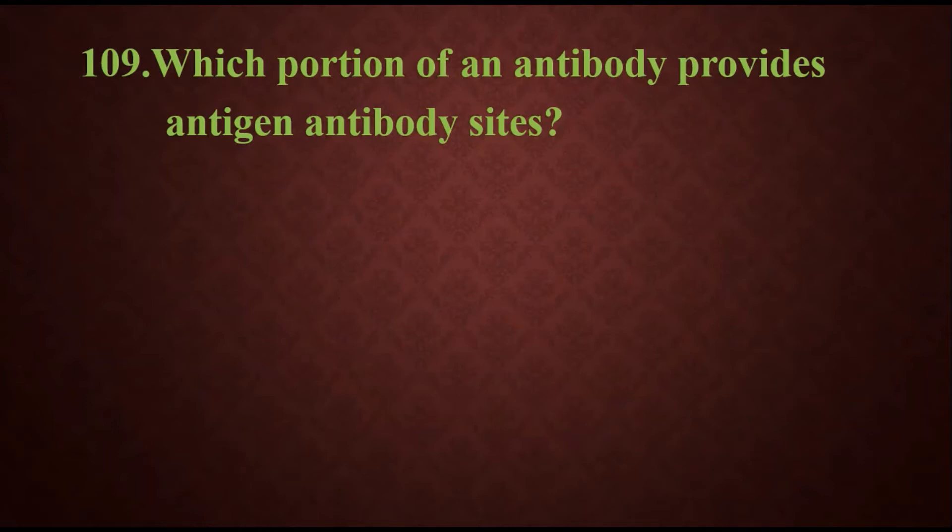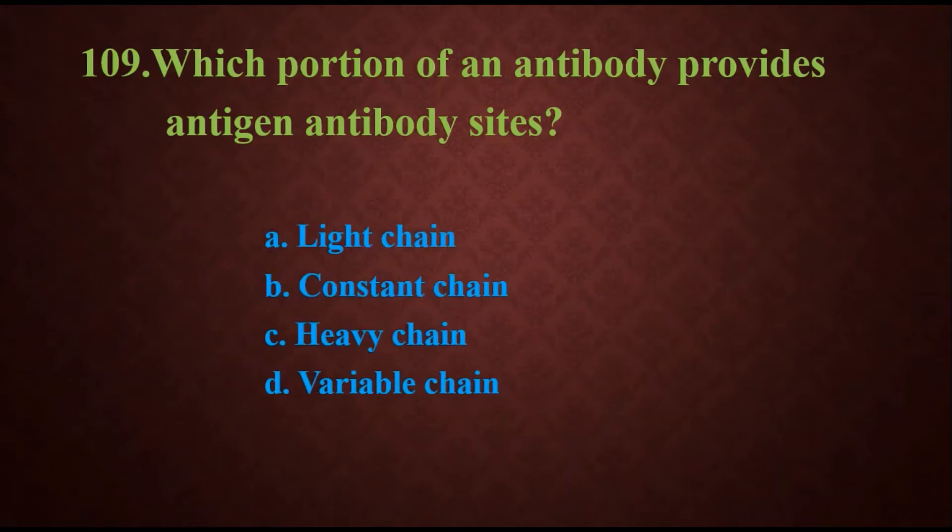Question 109: Which portion of an antibody provides antigen antibody sites? Options are light chain, constant chain, heavy chain, or variable chain. The answer is the variable chain. You have to understand antibody structure where we have two light chains and two heavy chains. In both chains, we have constant and variable regions. The variable region is the upper part where it binds to the antigen.